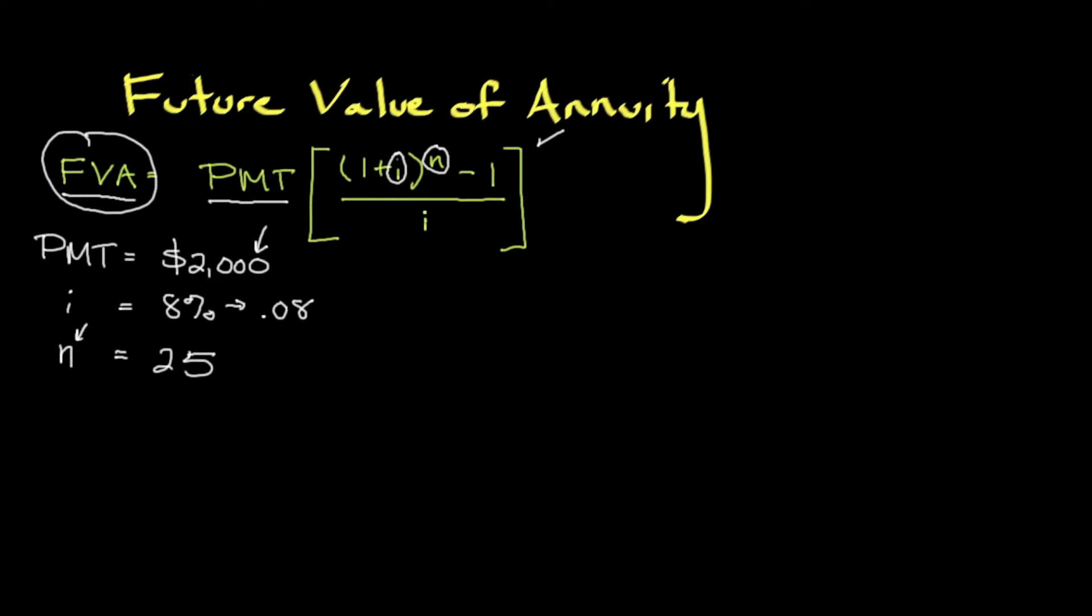The next component is to start filling in all of these different variables. We're going to start with payment which is $2,000, then we put our bracket, then we put 1 plus our interest rate converted to a decimal which is 0.08 to the nth power which is 25, minus 1. We'll put our other bracket and divide by 0.08. That's how your calculations should look if you filled in all the known variables.